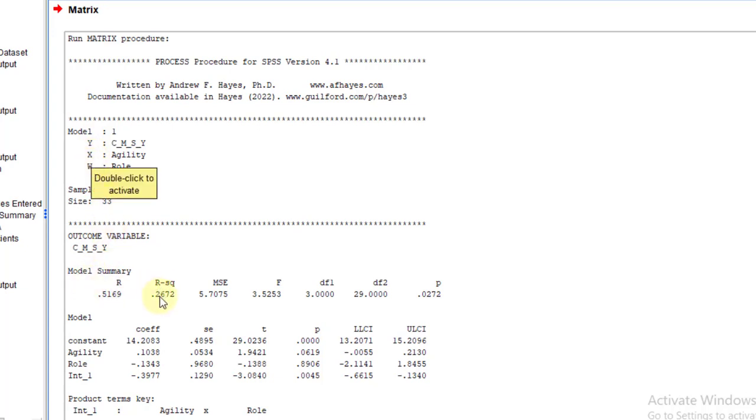Model summary: the model explained 26.72% variation in the CMSY. And this variation has been explained by the agility and the role. Further, the model is found to be significant in predicting CMSY because the p-value is less than 0.05.